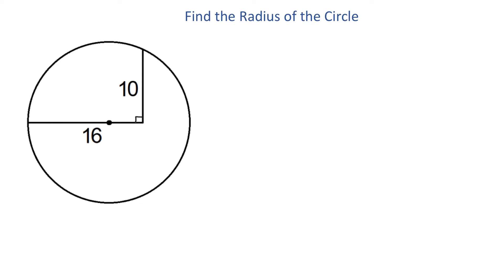In this video, we have a circle, and here is the center, and a line segment that passes through the center and has the measure of 16 units, and another line segment that is perpendicular to the first one and measures 10 units. We need to find the radius of this circle.